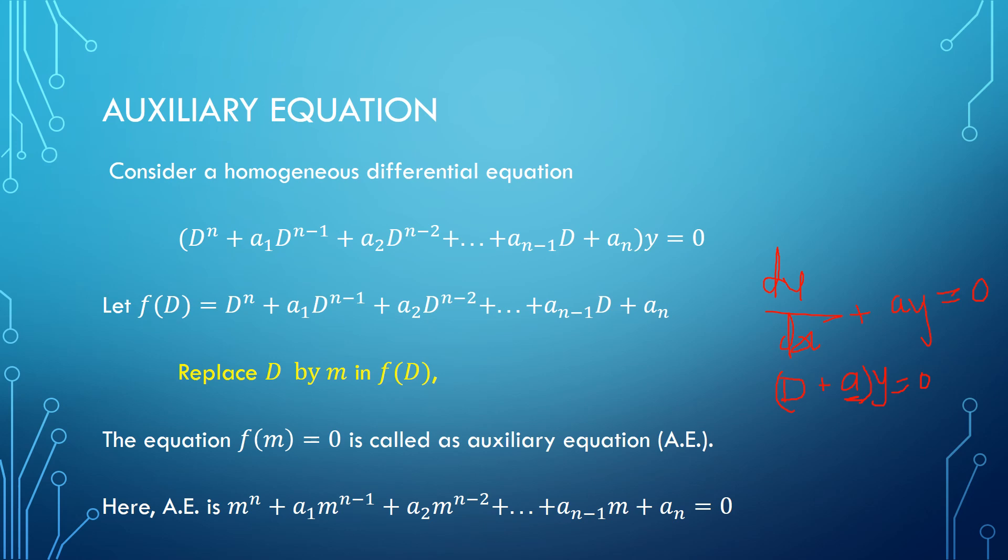Now let us come to the complementary function — the solution of the homogeneous DE. For a second-order DE, the auxiliary equation is quadratic and has exactly two roots, m₁ and m₂. The roots can be real and distinct, real and repeated (equal), or complex, depending on the discriminant. If the AE has degree n, there will be n independent solutions, so the differential equation also has n independent solutions.